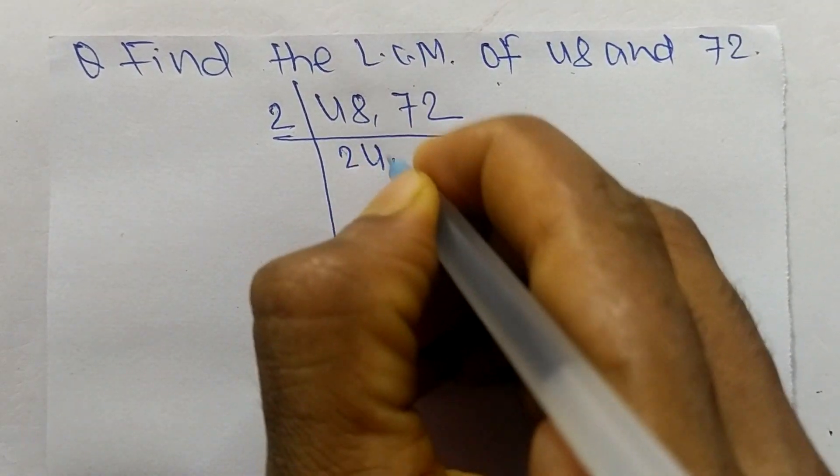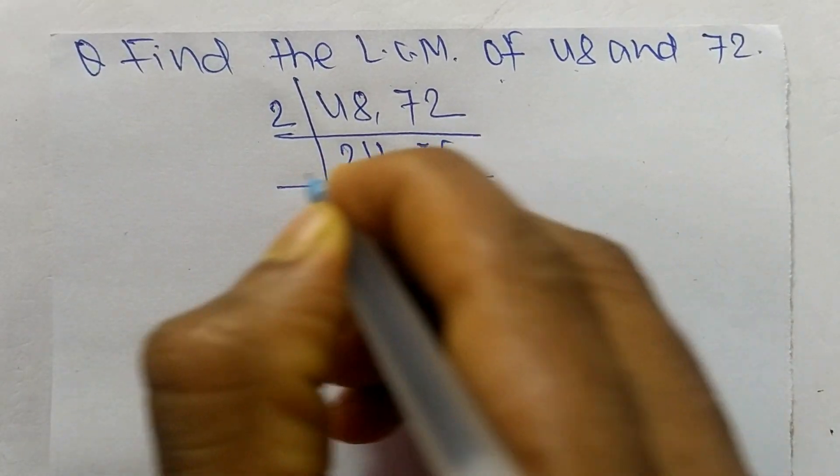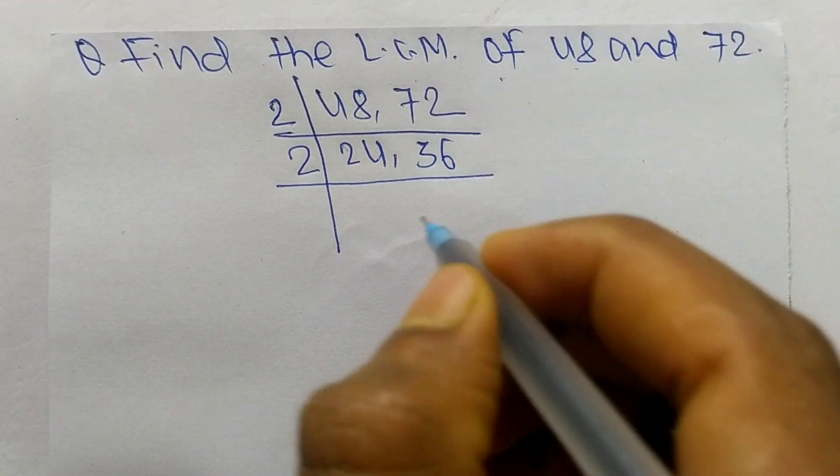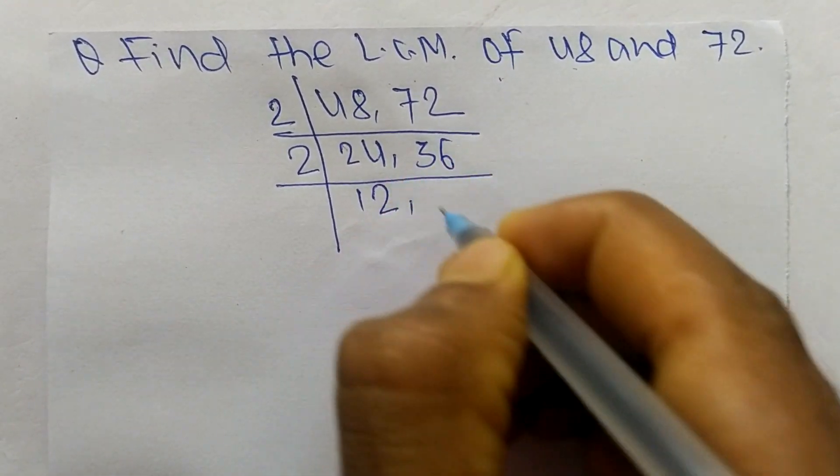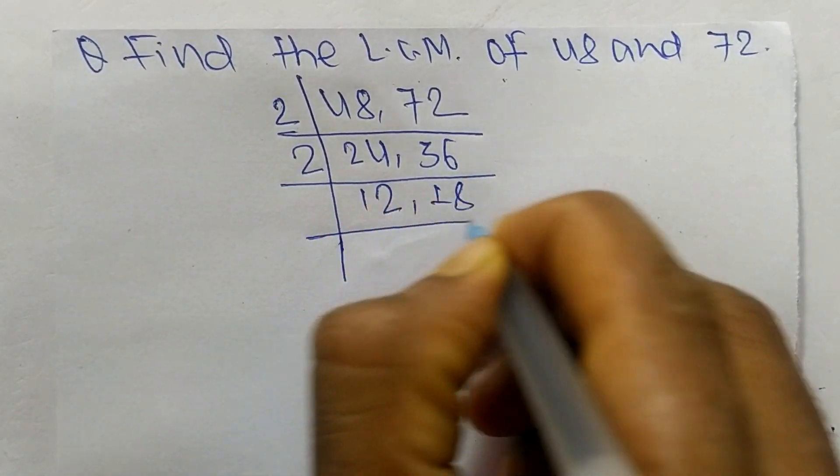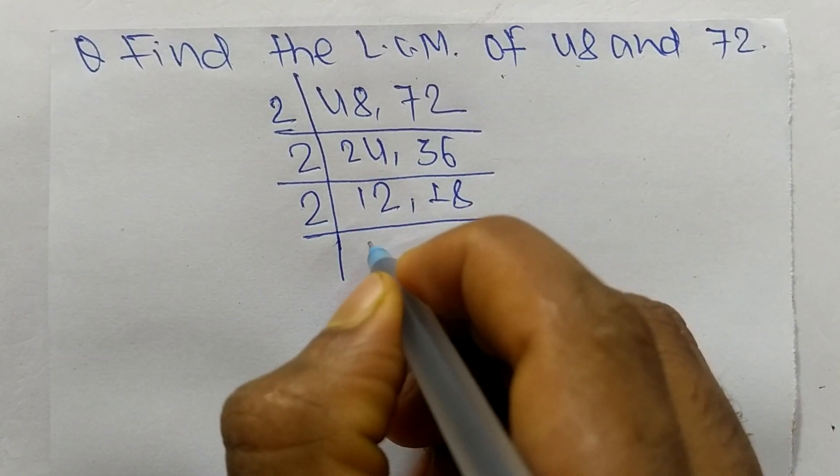2 times 24 means 48, 2 times 36 means 72. Again both are divisible by 2, so 2 times 12 means 24, 2 times 18 means 36.